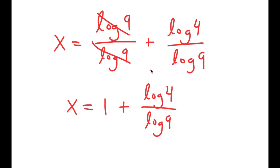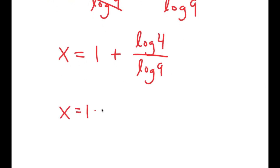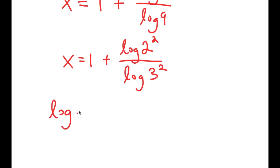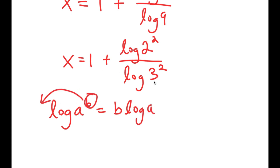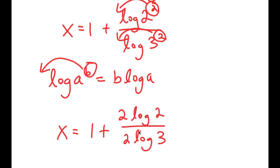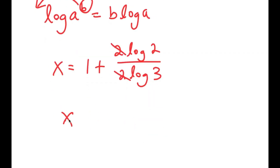From here I'm going to simplify by rewriting log 4 as log of 2 squared — since 4 equals 2 squared — and rewrite log 9 as log of 3 squared. Using the property that log of a to the power of b equals b times log a, I move the exponent 2 to the front of each: log 2 squared becomes 2 times log 2, and log 3 squared becomes 2 times log 3. So x is equal to 1 plus 2 times log 2 over 2 times log 3, and the 2's cancel out, giving x equals 1 plus log 2 over log 3.